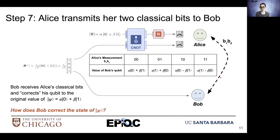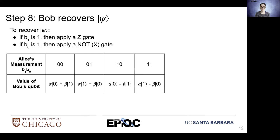If Alice measures these bit combinations, the value of Bob's qubit will be reflected accordingly. To recover psi, Bob has to do the following: if the first bit Alice measures is one, Bob applies a Z operation.